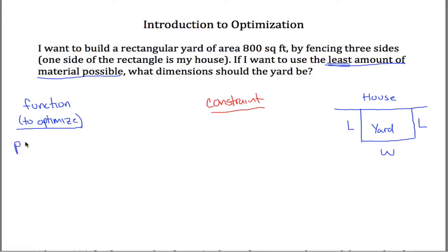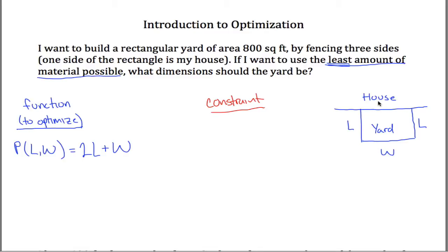To write it in function notation: P(L, W) = 2L + W. The perimeter depends on L and W. It's 2L because I have an L on one side and an L on the opposite side, but only one W, because where the other W would be, I have a house. This is the function I'm going to take the first derivative of, set equal to 0, and solve.